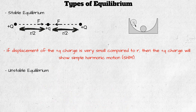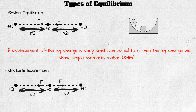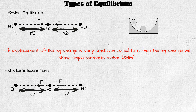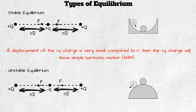Second, unstable equilibrium: in the above case, if we replace the small positive charge q with a small negative charge q, the equilibrium becomes unstable along the axis. When the small negative charge is moved along the axis towards either charge, the attractive force increases, forcing it to leave its mean position — similar to a ball placed on top of a hill, where a slight displacement causes the net gravitational force to pull it further away.